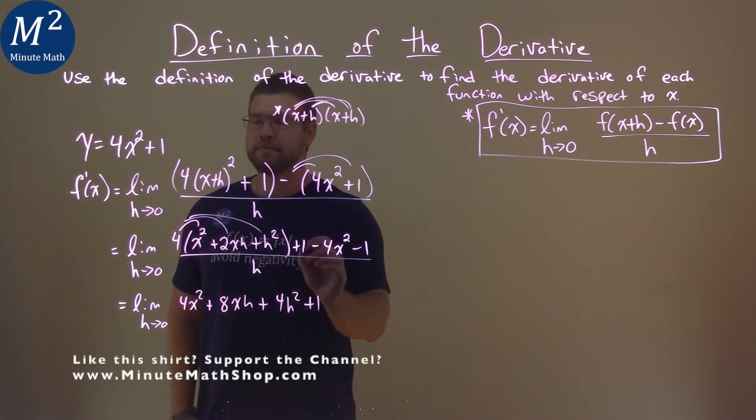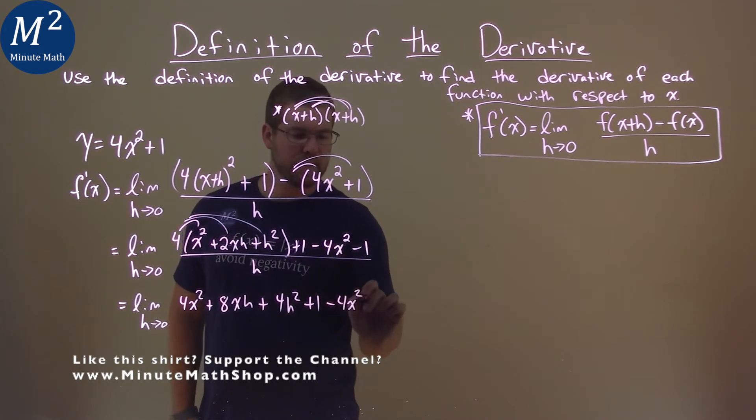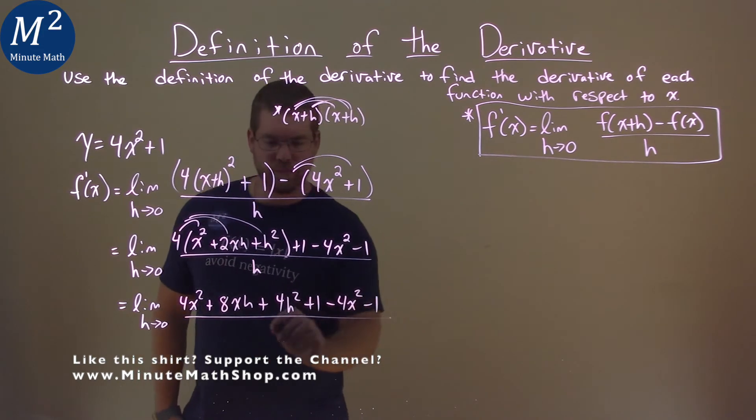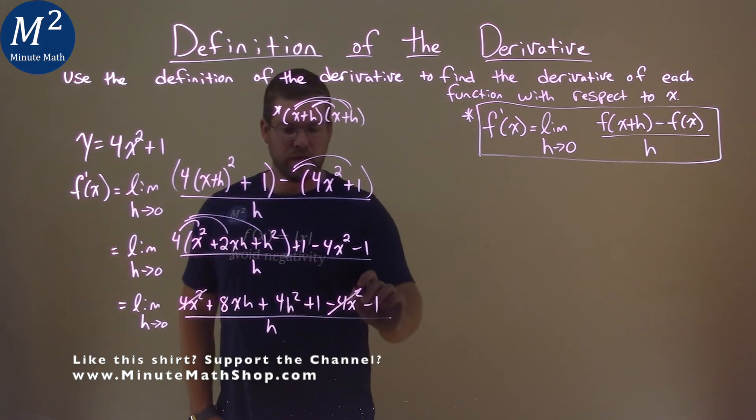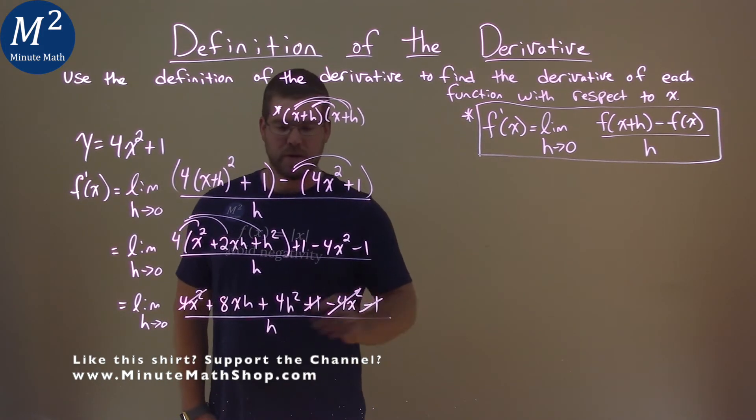Now we're minusing, okay, minusing a 4x squared and minus a 1, all over that h. Now here's where the magic happens. 4x squared cancels right here. Plus 1 and minus 1 cancel.